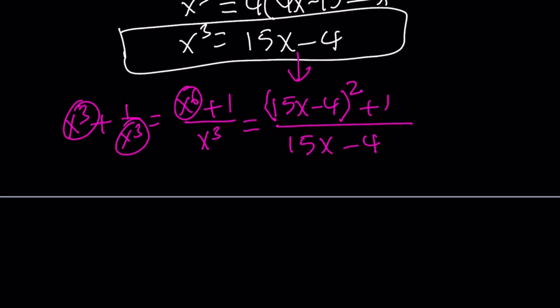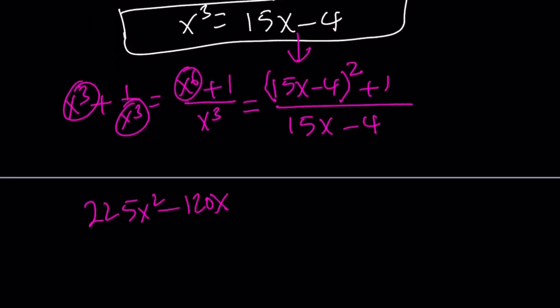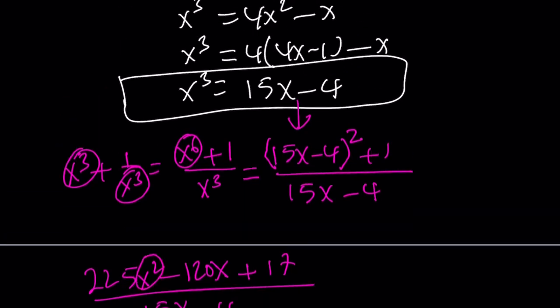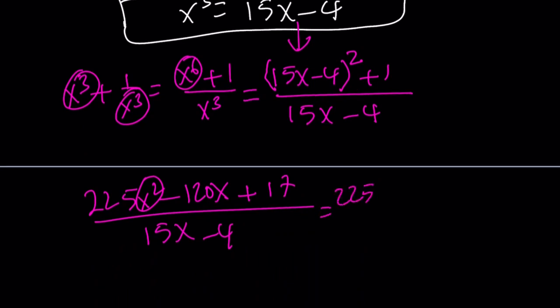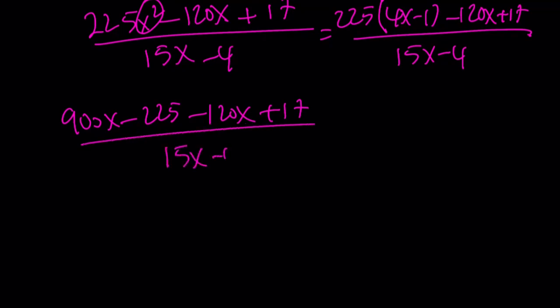This is going to give me 225x squared minus 120x plus 16 plus 1, plus 17. That is divided by 15x minus 4. Now, x squared again can be replaced with 4x minus 1. So that's 225 times 4x minus 1 minus 120x plus 17 divided by 15x minus 4. Now, if you go ahead and distribute, you're going to get 900x minus 225 minus 120x plus 17 divided by 15x minus 4. And finally, this is going to give us, almost finally, 780x minus 208 divided by 15x minus 4.